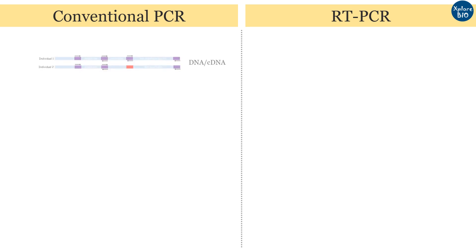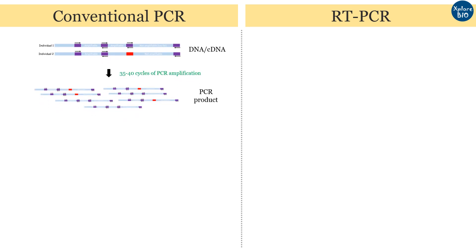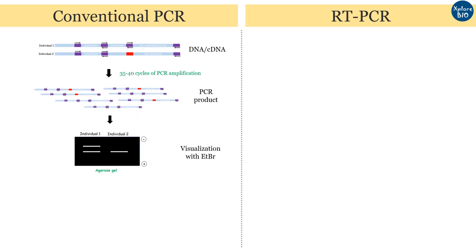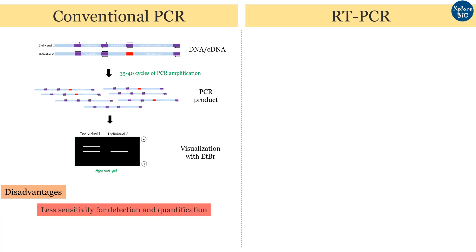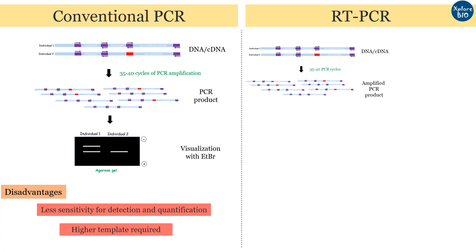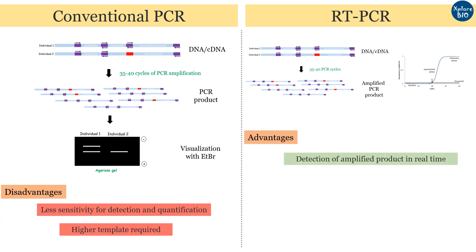In conventional PCR, you can amplify a gene or DNA locus which is later detected on an agarose gel or PAGE. It has two major problems: precise quantification of gene expression is not possible, and the DNA template required is significantly more because EtBr is less sensitive than fluorescence dye. Real-time PCR, on the other hand, precisely detects and quantifies the expression of a target gene in a real-time manner after each PCR cycle, and is more sensitive in detecting minor differences in gene expression.